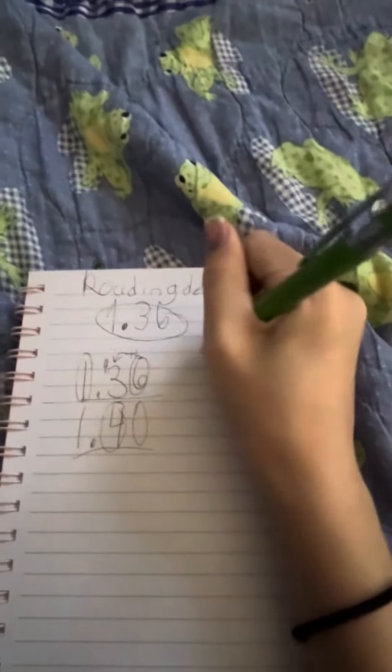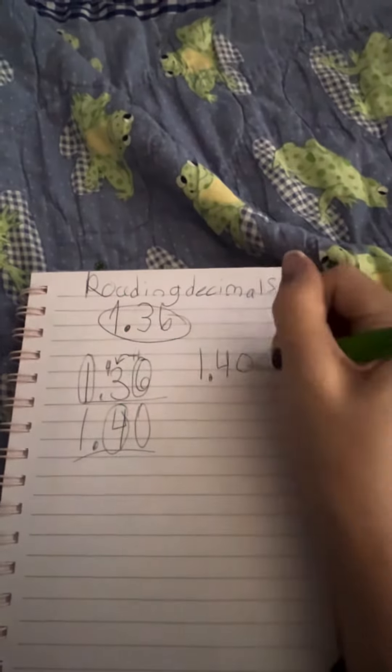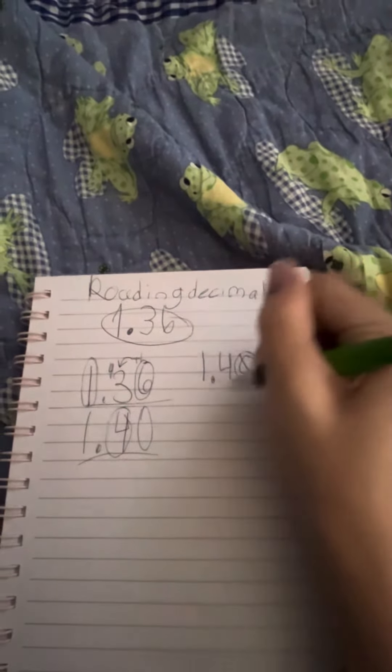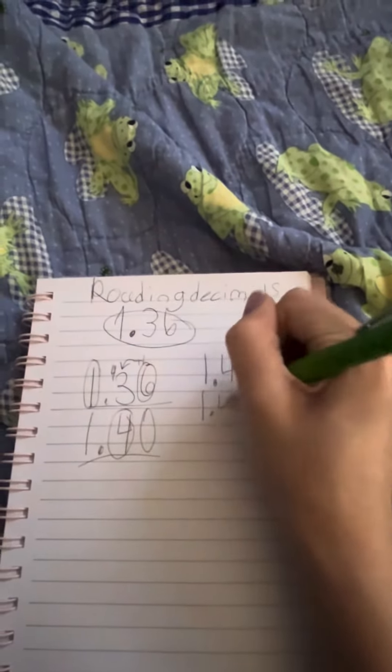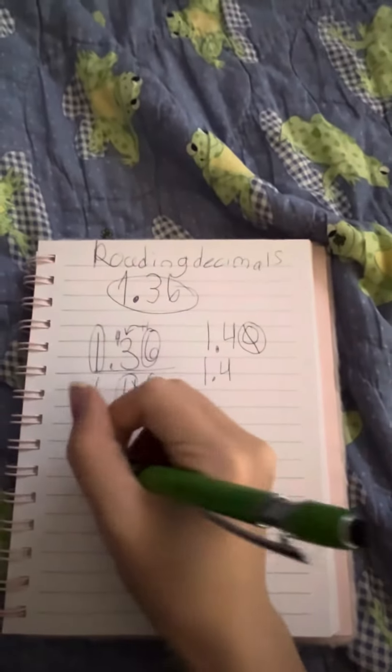Now we have our number, 1 and 40 hundredths. We could also take off the 0 to make it 1 and 4 tenths. This is the basic math on how I usually do it.